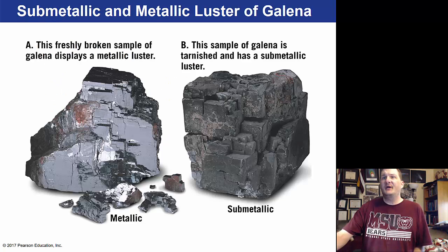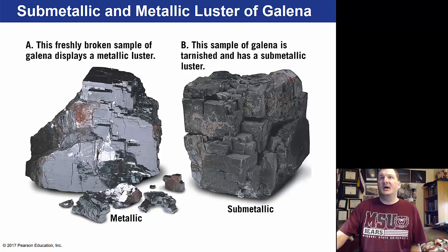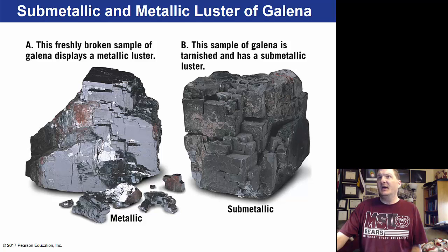For example, galena breaks off along certain planes — we call this cleavage. Galena is metallic, while tarnished galena has a sub-metallic luster and is not as shiny.